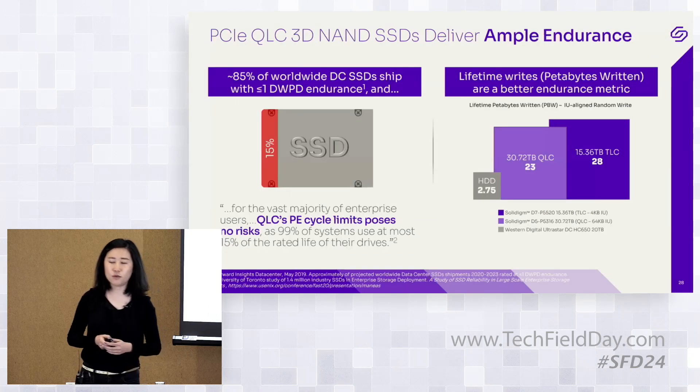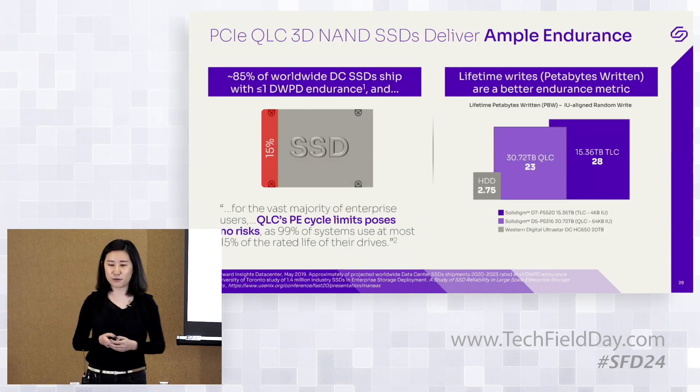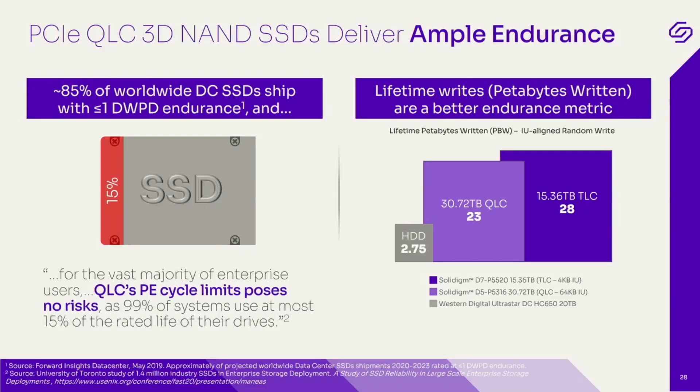Let's move on to endurance. Many of you may have wondered what endurance looks like for QLC versus TLC. I'm often asked: what is your endurance for QLC? To answer that, it's about 0.35 DWPD. Some may think that means the drive will last half as long as before — but that's not the case. That's a misconception.